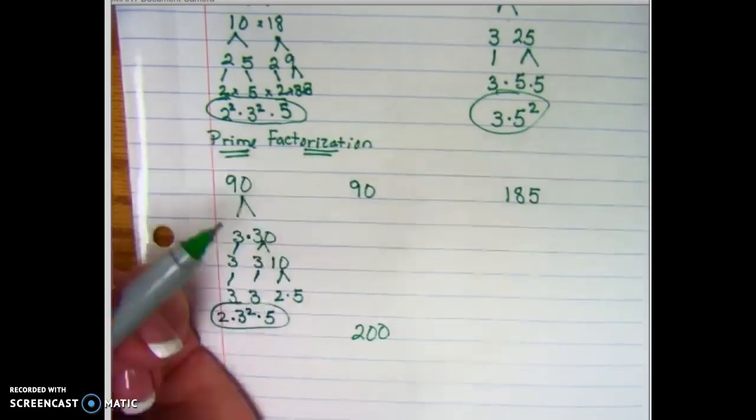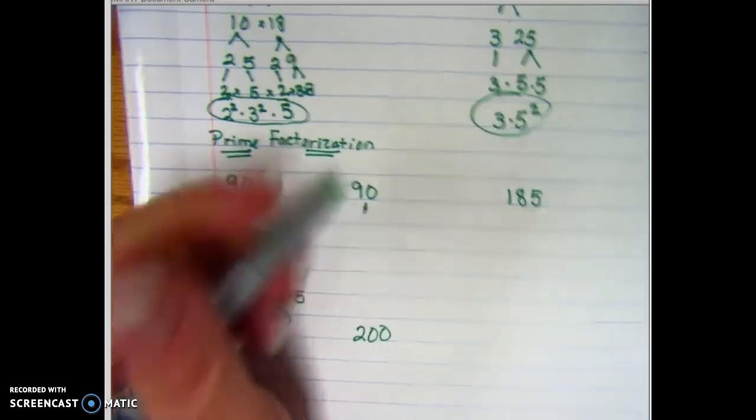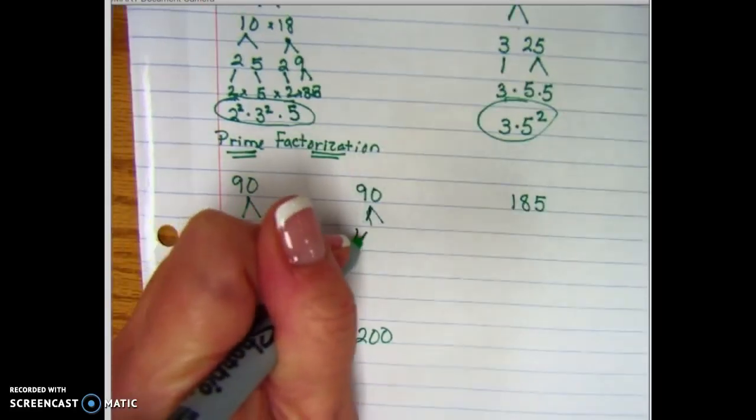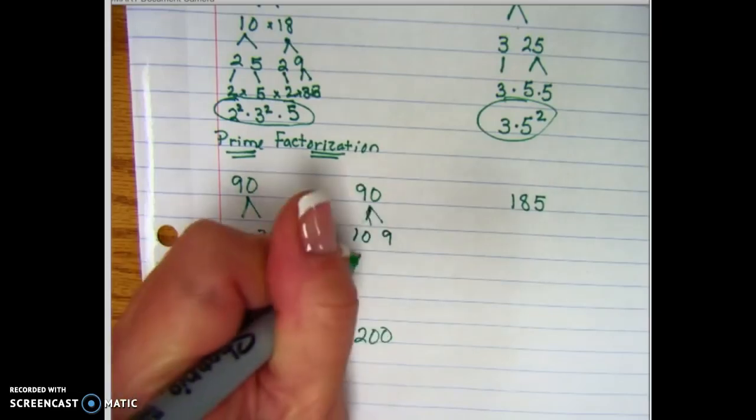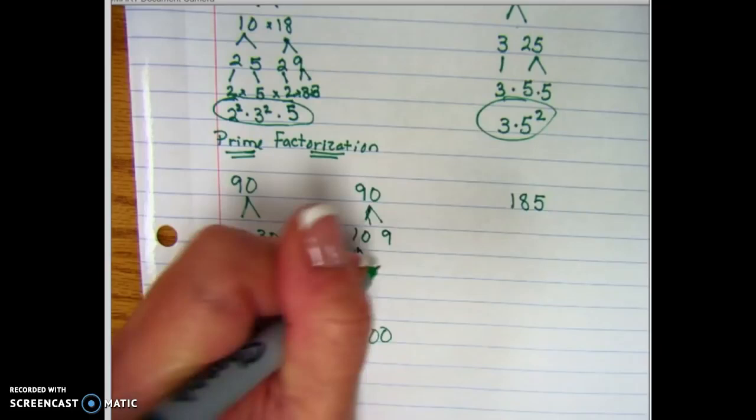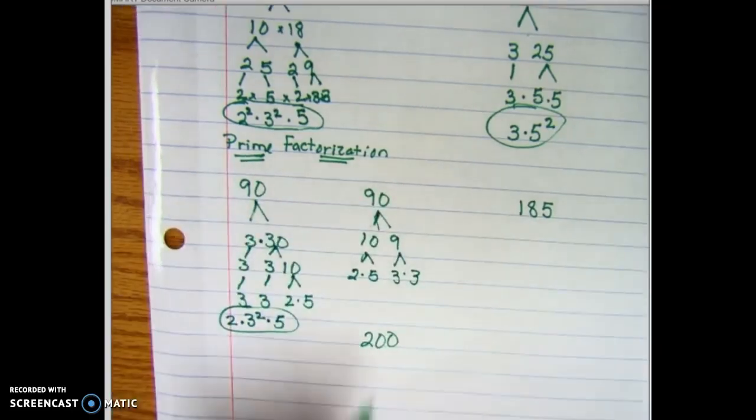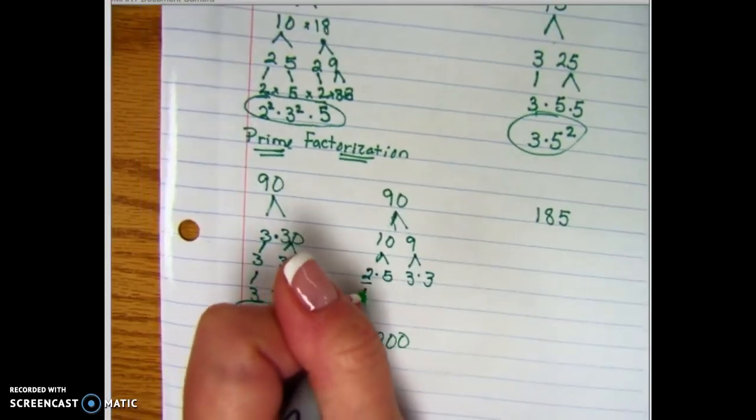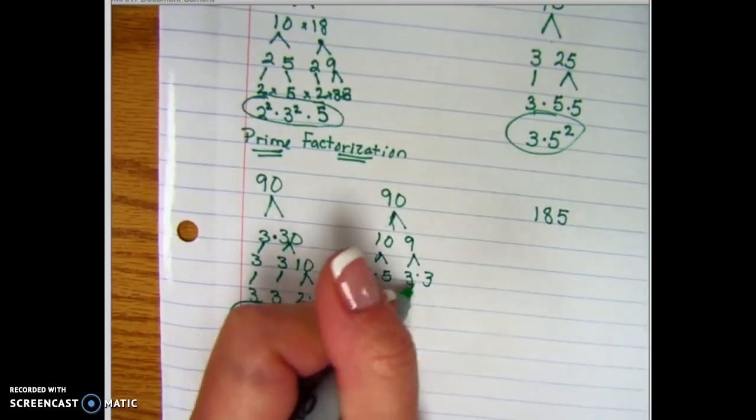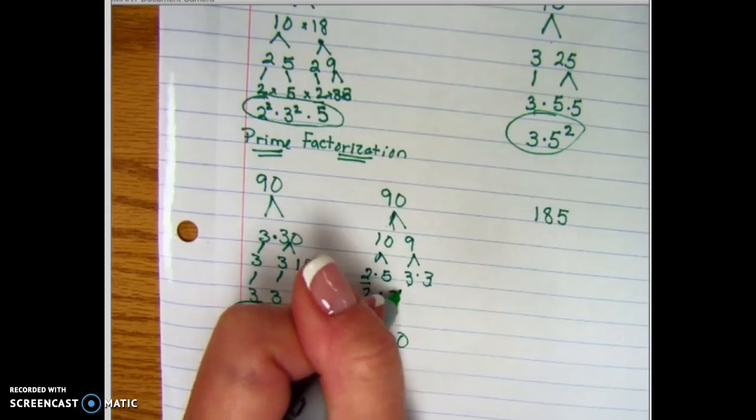So in this case, let's do 10 times 9. Here again, we're going to do 2 times 5, and here we're going to do 3 times 3. So eventually we're going to get - start with the 2, times 3 to the second power, times 5.